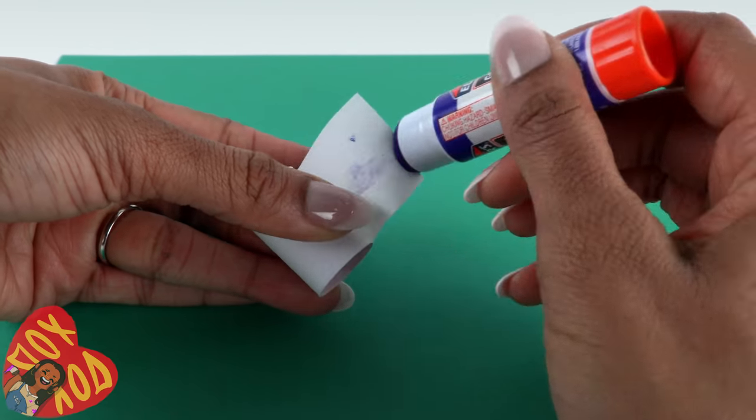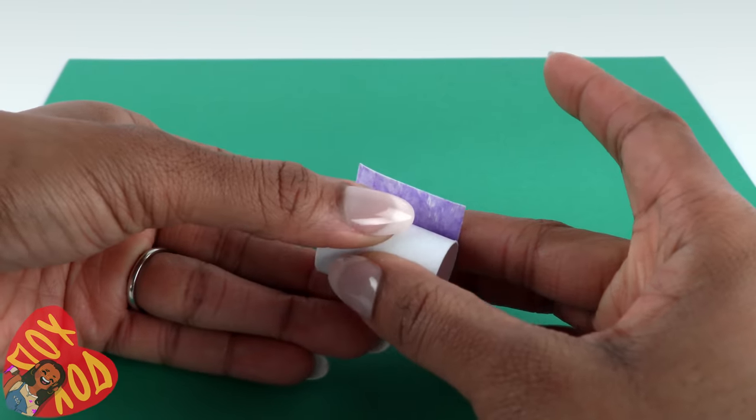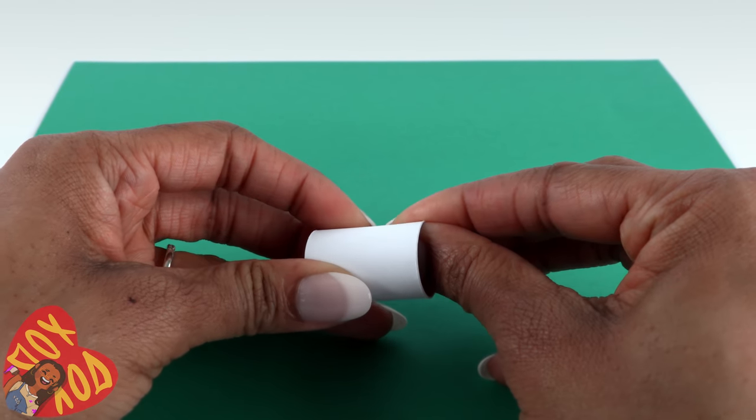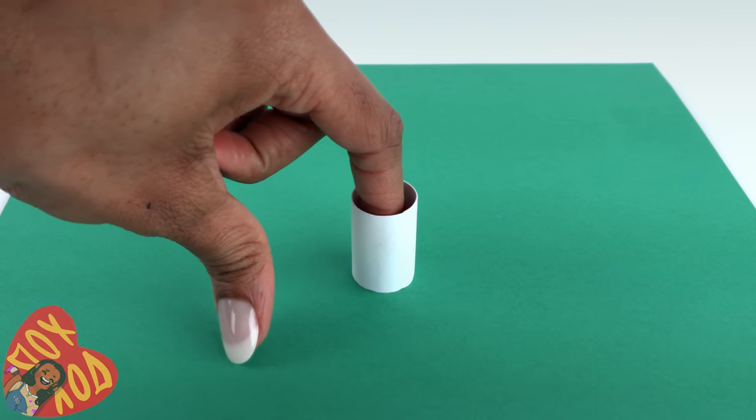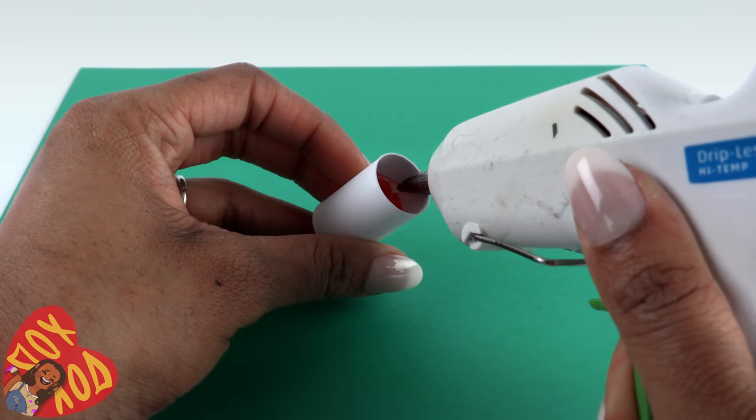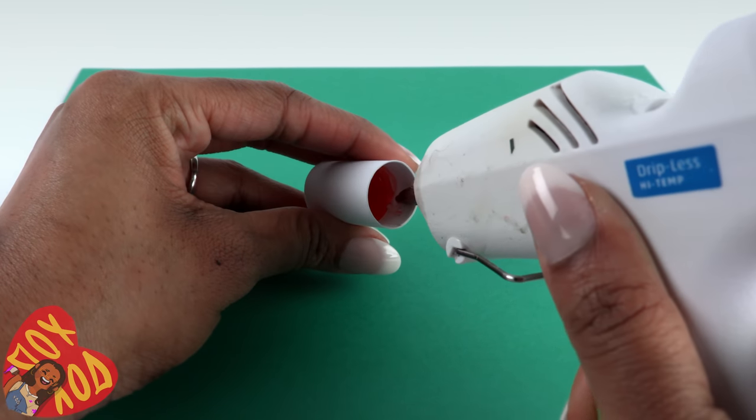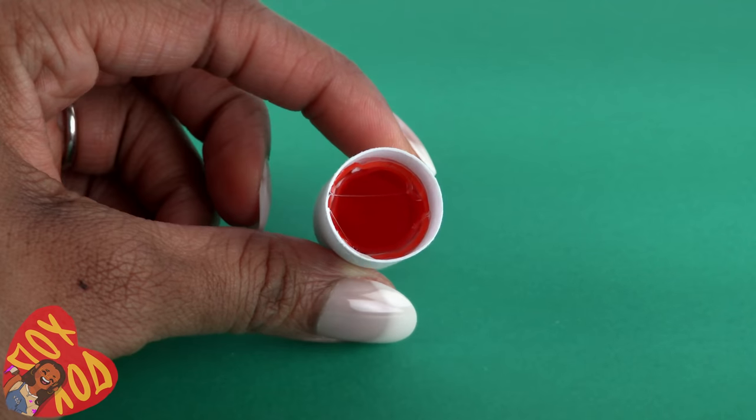Use a glue stick to put glue on the end, then continue rolling. Hold it for a few seconds to make sure it is glued down and you have a nice little paper tube. Push the cap all the way to the bottom. I'm going to put a little hot glue around the inside edge to make sure the cap is glued to the paper. Allow it to dry.